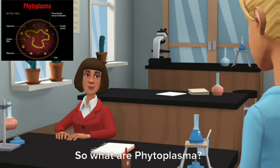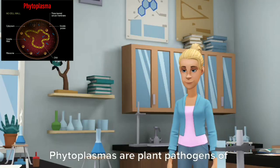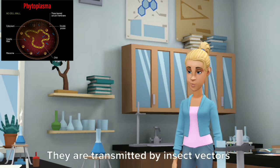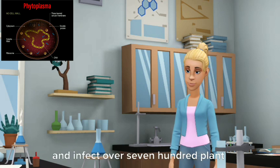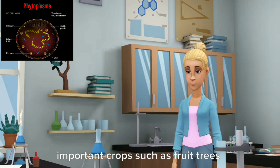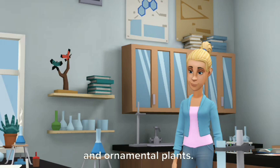So what are phytoplasma? Phytoplasmas are plant pathogens of the bacterial class mollicutes. They are transmitted by insect vectors and infect over 700 plant species, including many economically important crops such as fruit trees and ornamental plants.